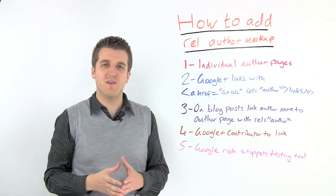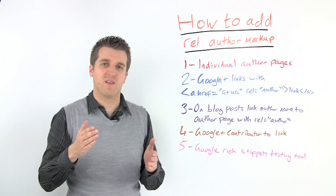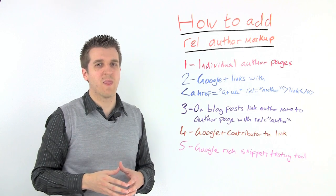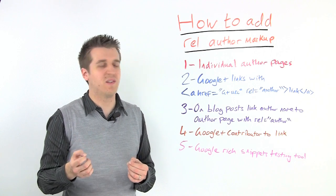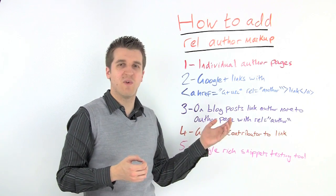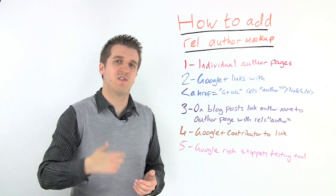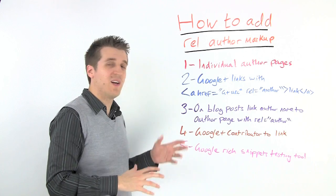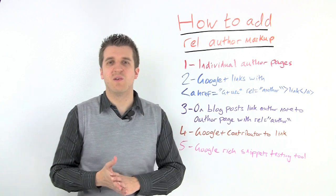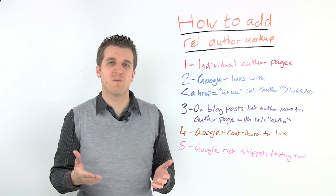Next, you need to tell Google which author has written which blog post, and you do that by linking from blog post to the individual author page. Again, you should use the rel author tag to do this to pass that information over. When you've done that, you're actually finished with all the things you've got to do on your website, so it's quite a simple process.